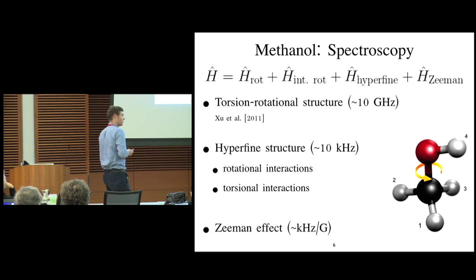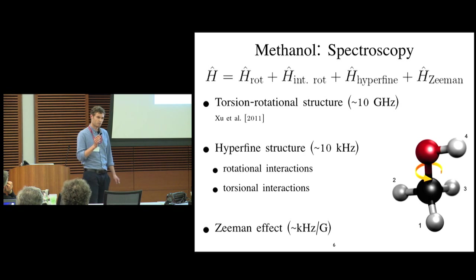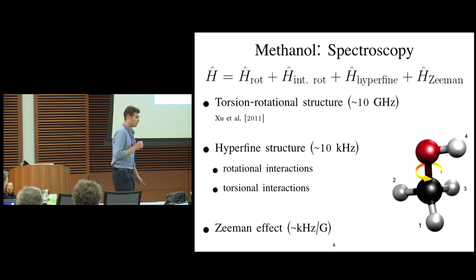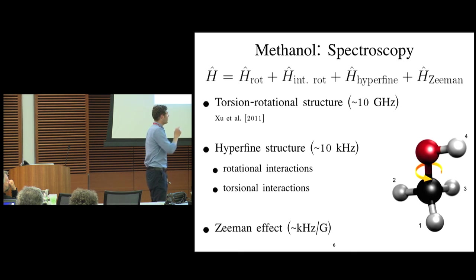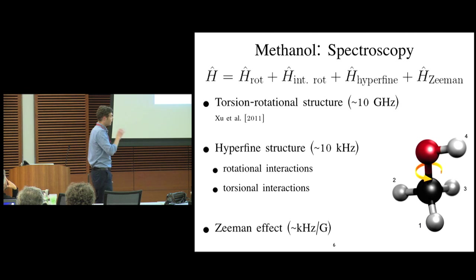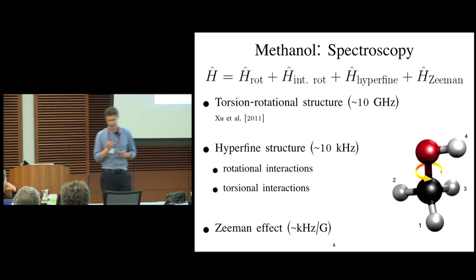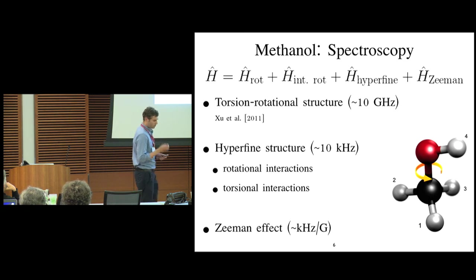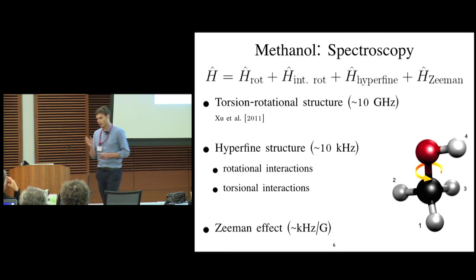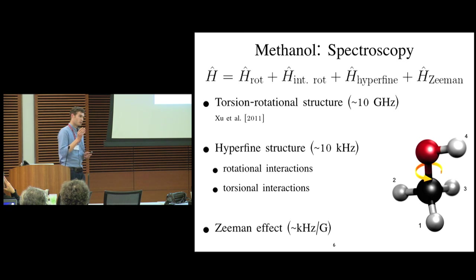The torsional rotational structure is about 10 GHz wide. Then the hyperfine structure consists of the interactions of the magnetic moments of the nuclear spins of the protons in Methanol. The C and the O atom both have nuclear spin zero, so they don't participate in the hyperfine structure, and the protons interact within each other, which is called the dipole-dipole interaction. But there is also interaction with the overall rotation of the molecule. This is the spin rotation interaction. But why the hyperfine structure is so difficult is that there is also an interaction of the magnetic moments of the proton with the torsion in Methanol. So the hyperfine structure is on the order of tens of kilohertz.